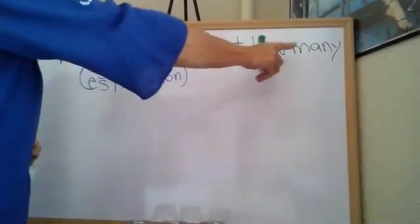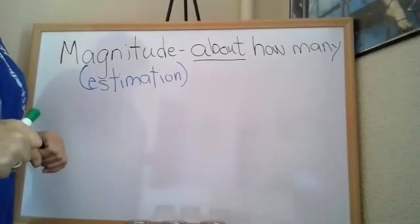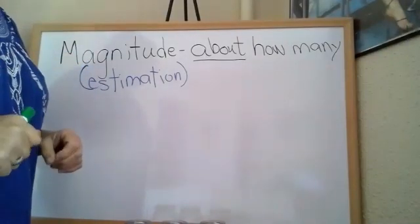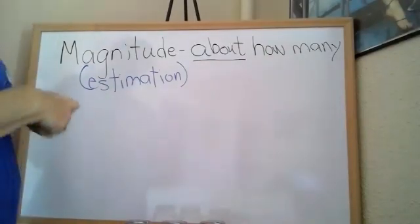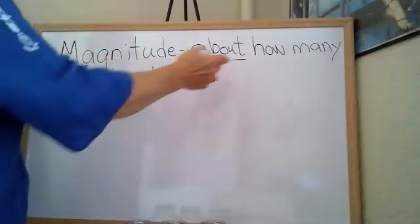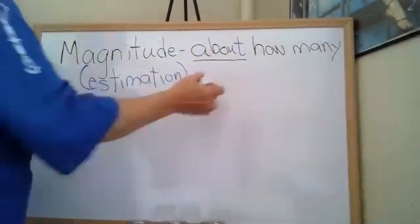Today your I can statement is I can tell or estimate how many beans are in a jar. We learn that an estimation or magnitude, we don't ever have to have the exact answer.